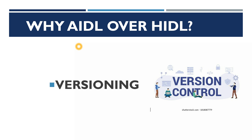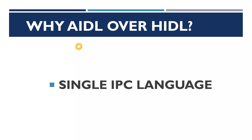The second reason is versioning. With HIDL, every time you make improvements, you have to create a different folder with a new version name and start everything again. With AIDL, there is no such versioning confusion. If there is an AIDL file you've been developing for years, you just append new interfaces at the end of the file. You can even add interfaces at runtime, so there's no versioning problem — it's very easy compared to HIDL.